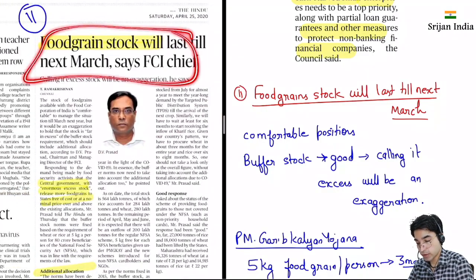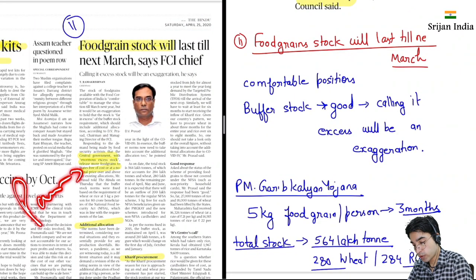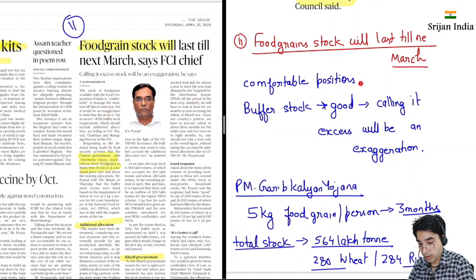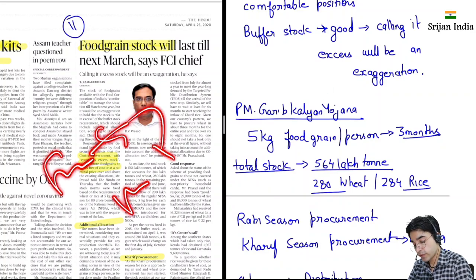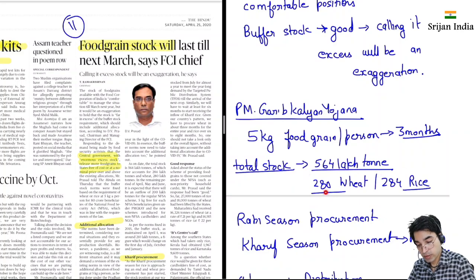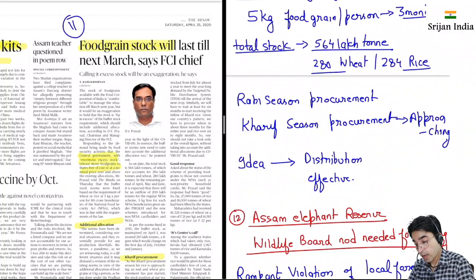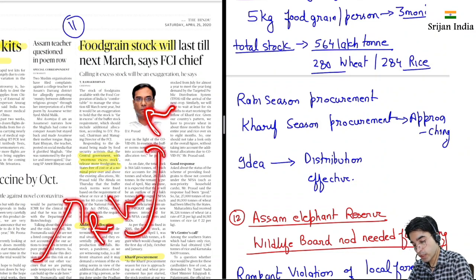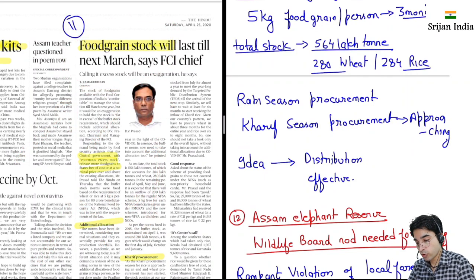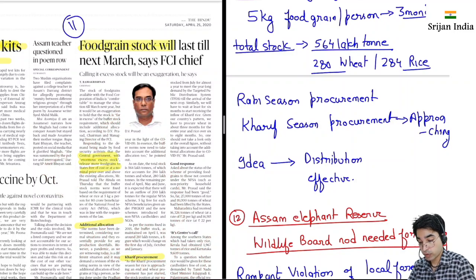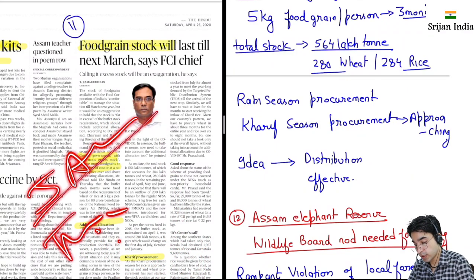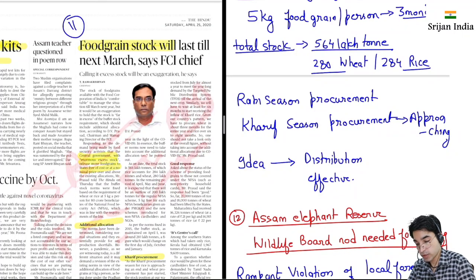Food grain stock will last till next March — FCI chief ne clarify kiya hai. Yeh bahut zaroori bhi hai kyunki jab pandemic hota hai, next problem aati hai food shortage ki. Abhi hum thankfully comfortable position pe hain, buffer stock achha hai — calling it excess will be an exaggeration, matlab sufficient hai. Abhi Pradhan Mantri Garib Kalyan Yojana mein 5 kg ann dे rahe hain har person ko for 3 months — idea hai ki food ke kaaran kisi ka starvation se death nahi honi chahiye. Total stock abhi hamare paas 564 lakh ton ka hai — 280 lakh ton wheat aur 284 lakh ton rice hai. Rabi season ki wheat procurement start ho gayi hai toh replenish ho jaayega. Idea ab yeh hai ki food ki kami nahi hai, idea hai uski targeted delivery effectively dene ka — jis bande ko zarurat hai, us tak pahunchana, isliye Aadhaar, mobile, MGNREGA, PDS — public distribution system — could be very useful.